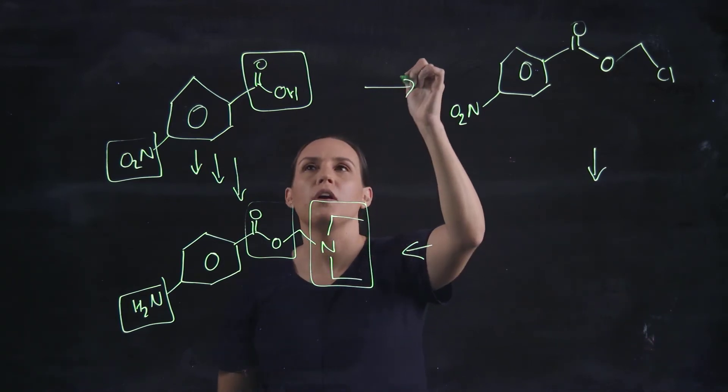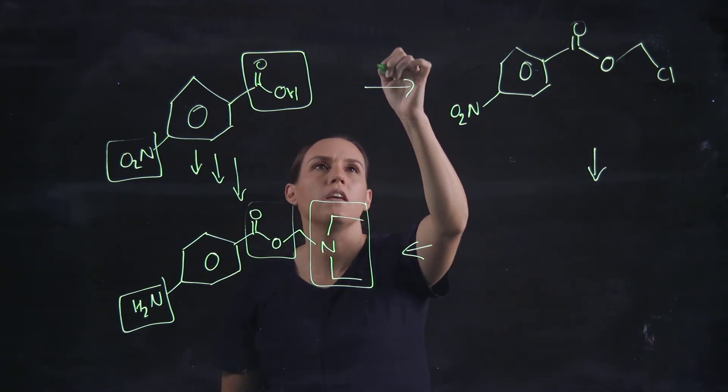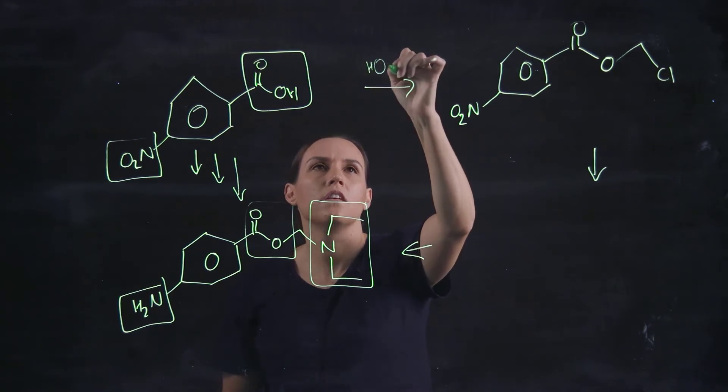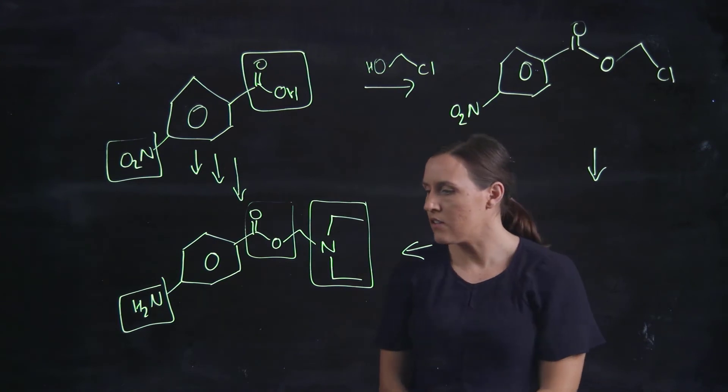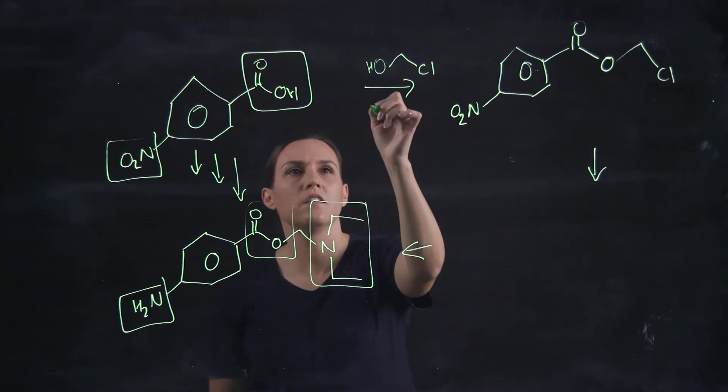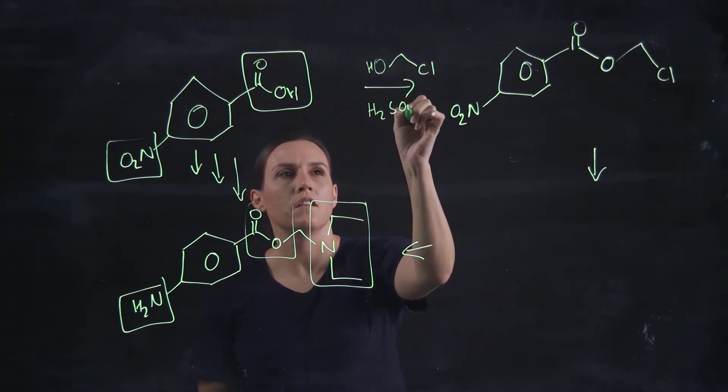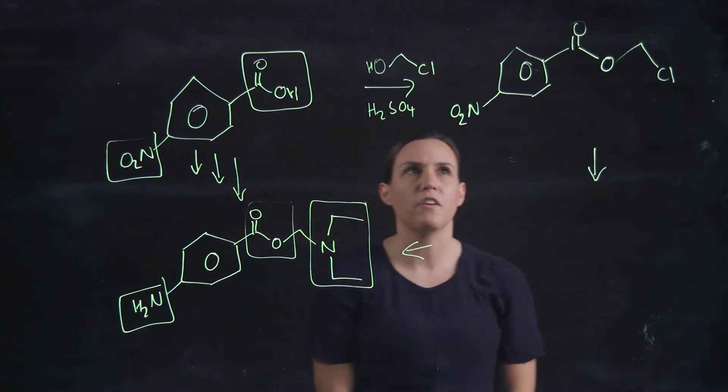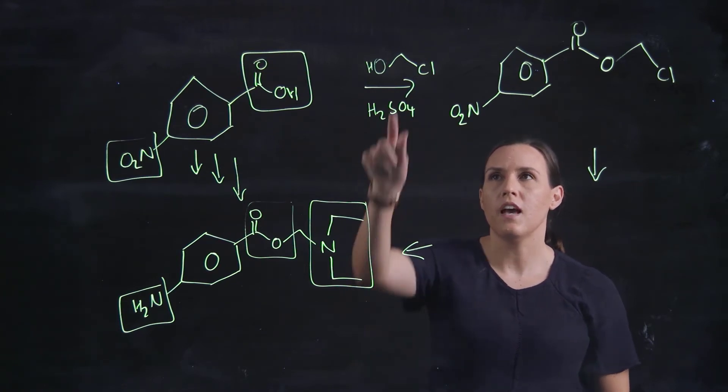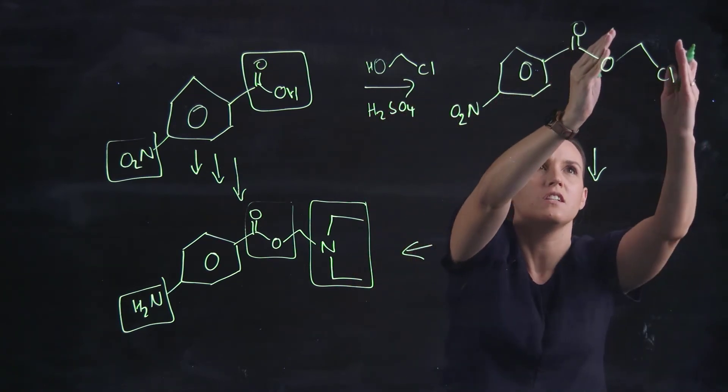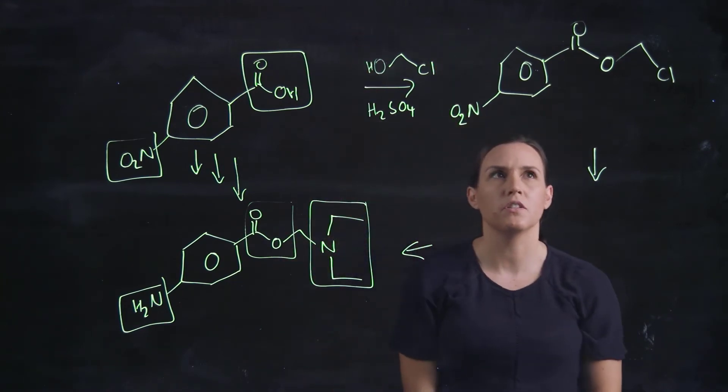So our reagent that we're going to be adding in there would be OH(CH2)2Cl. Okay, so that would be under acidic conditions so that we get that reaction to proceed. So sulfuric acid is a good one, and then we've got our group that we're attaching. So that's literally just that there with a hydrogen attached to it.